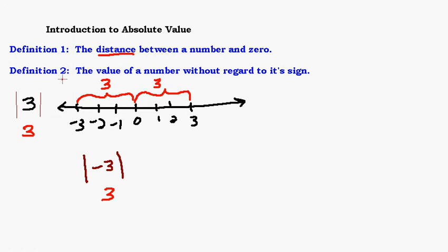This is where definition two comes in, which is a little simpler: the value of a number without regard to its sign. In other words, just ignore whether it's positive or negative and just say the number. Positive three — ignoring the sign, you just say three. Negative three — ignoring the negative, you just say three. Without regard to its sign, what number are we looking at? That's basically all it is.